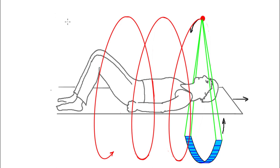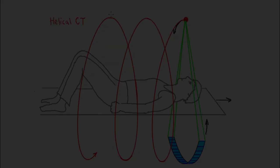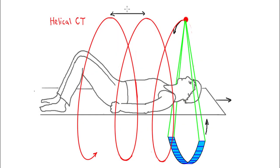This is called helical CT. There's another way to do it — you can do it slice by slice — but most systems now are using a helical scanning protocol. One critical thing is the distance between these spirals. If the tube starts up here, goes around the loop and ends here, that's one rotation of the tube, and the table travels a distance d.